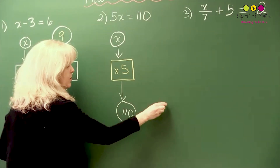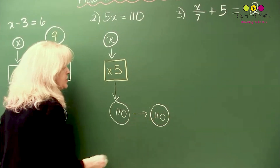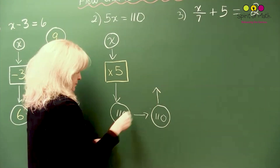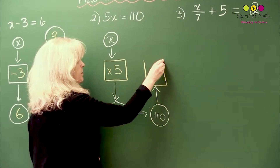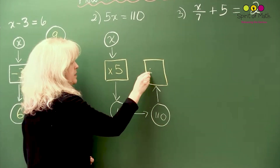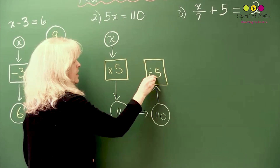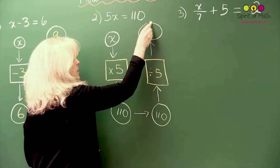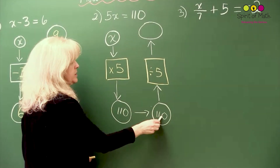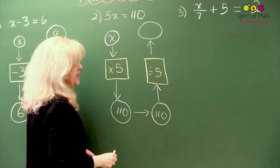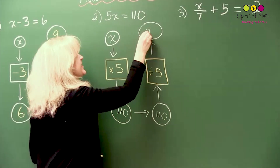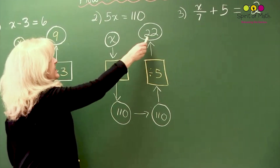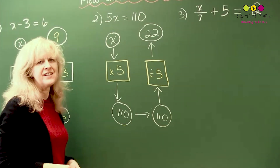Now you're going to go backwards and solve this equation. You do the opposite of the operation sign: divided by 5. And that gives you the final answer. 110 divided by 5 is 22. So you've got 22. And if you double check: 22 times 5 is 110.